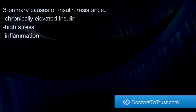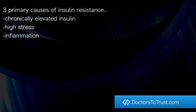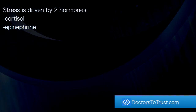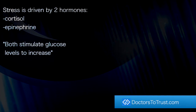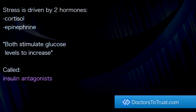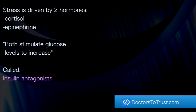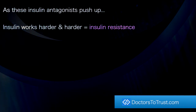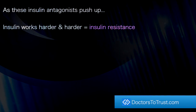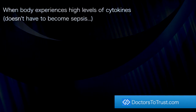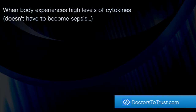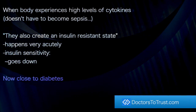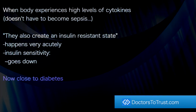There are three primary causes of insulin resistance: chronically elevated insulin, high stress, and inflammation. Stress is driven by two hormones — cortisol and epinephrine. Dr. Bickman says both stimulate glucose levels to increase; they are called insulin antagonists. As these insulin antagonists push up on glucose, insulin works harder and harder to push down — this is insulin resistance. When the body experiences high levels of cytokines, it doesn't have to become sepsis; they also create an insulin resistant state. It happens very acutely. Insulin sensitivity goes down, and now we are close to diabetes.